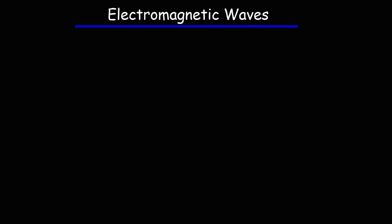In this video, we're going to talk about electromagnetic waves. What are electromagnetic waves? Well, for starters, they're waves. And what is a wave? A wave is a disturbance that can carry energy from one place to another.